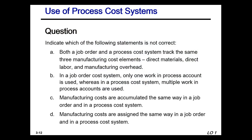Here's a new question: indicate which of the following statements is not correct. A: both a job order and a process cost system track the same three manufacturing cost elements — direct materials, direct labor, and manufacturing overhead. B: in a job order cost system only one work in process account is used, whereas in a process cost system multiple work in process accounts are used. C: manufacturing costs are accumulated the same way in both systems. D: manufacturing costs are assigned the same way in both systems. The answer is D — they are not assigned in the same way.